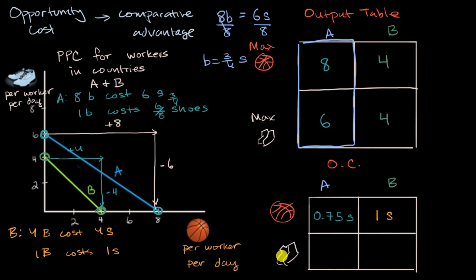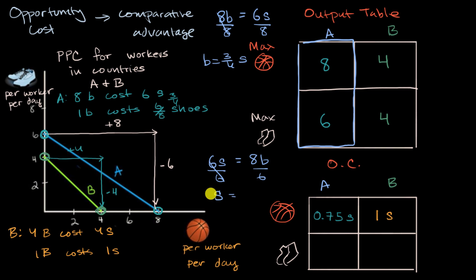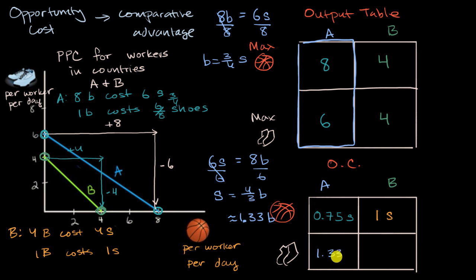Now let's do the opportunity cost for a pair of shoes in each country. In country A, the same energy that produces six pairs of shoes could produce eight basketballs. Dividing by six, the energy for one pair of shoes is equivalent to eight-sixths, or four-thirds of a basketball — approximately 1.33 basketballs. That is the opportunity cost of producing a pair of shoes in country A.